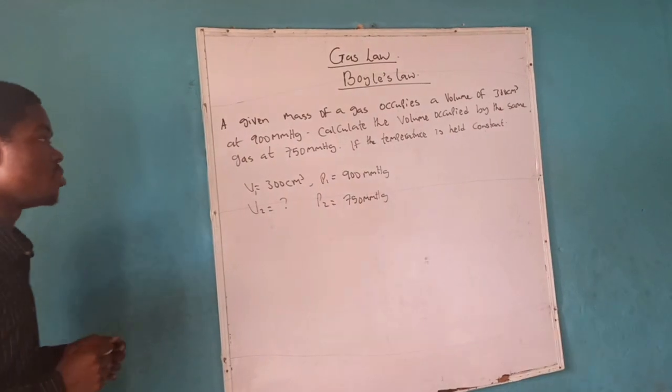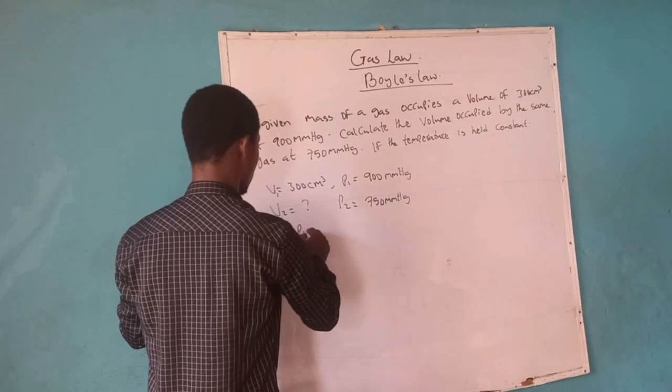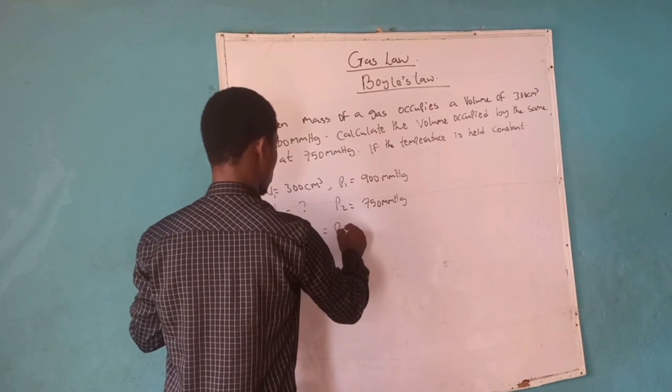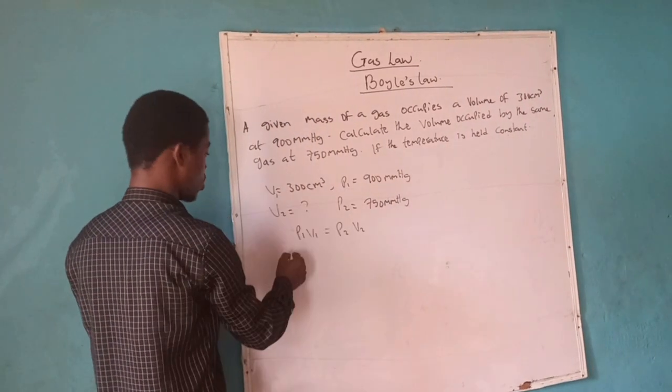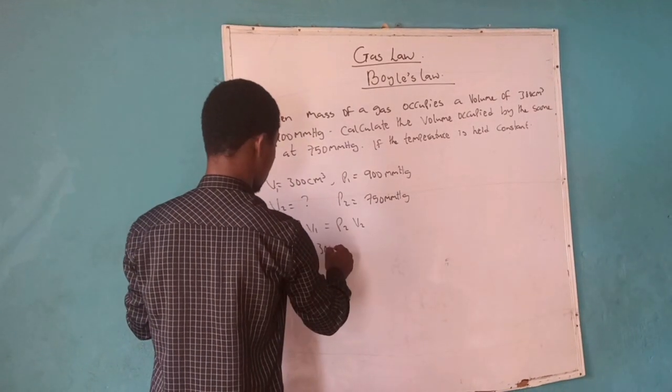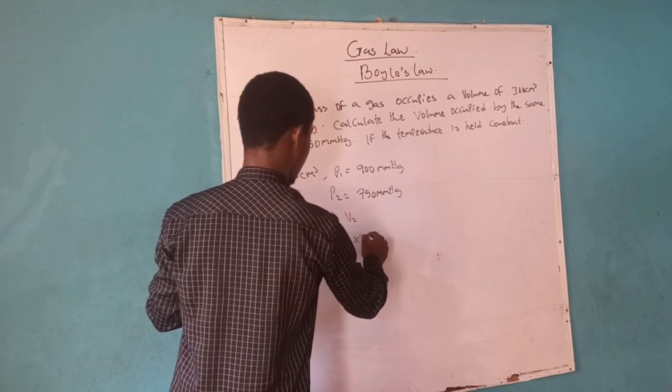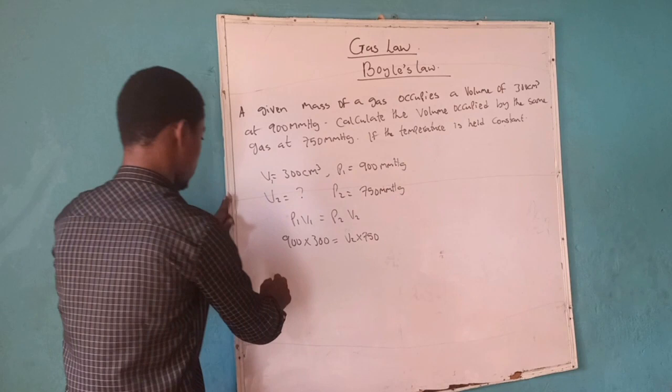So don't forget that for Boyle's law, P1V1 equal to P2V2. So the first pressure is 900, multiplied by the first volume 300, equal to P2, multiplied by the second pressure 750. So I can divide both sides by 750.